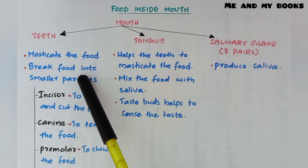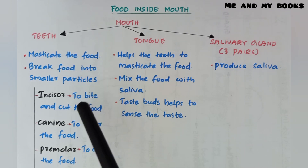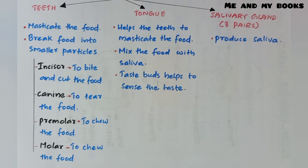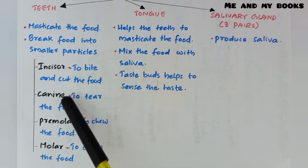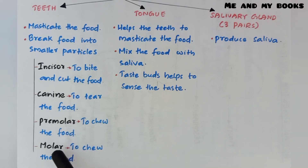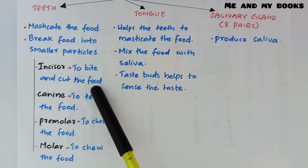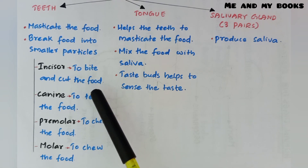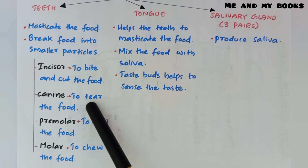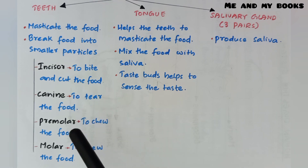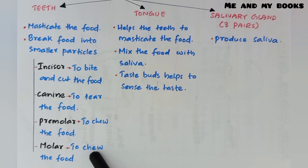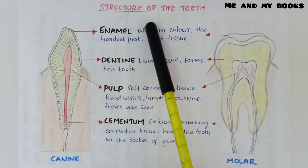There are 32 teeth of four different types: incisor, canine, premolar, and molar. Incisor helps to bite and cut the food. Canine helps to tear the food. Premolar and molar help to chew the food.